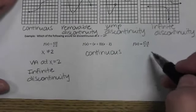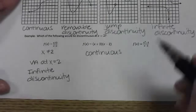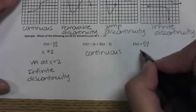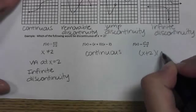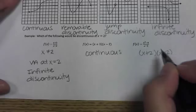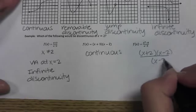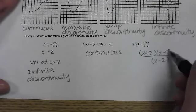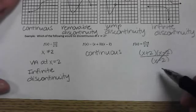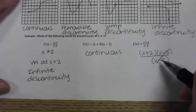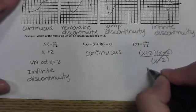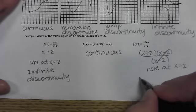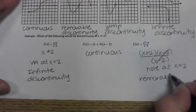Looking at the third example — again a rational function — we want to factor the top and bottom to see if it's a vertical asymptote or a hole. The numerator is the difference of squares, so it factors to x plus two times x minus two. The denominator is x minus two. Those factors cancel, and when they cancel it means we have a hole rather than a vertical asymptote. So we say there is a hole at x equals two, making it a removable discontinuity.